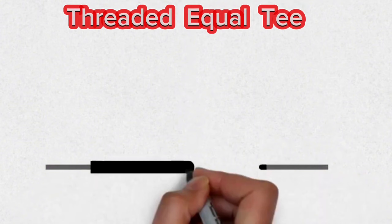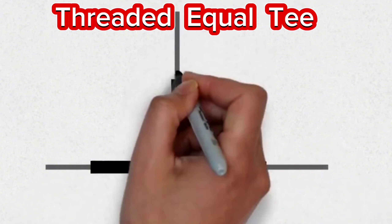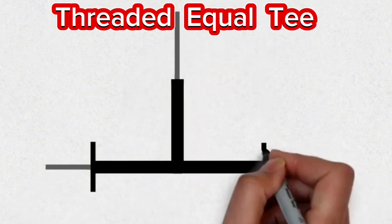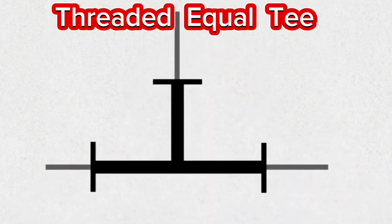This symbol, which is used in pipe isometrics, is the isometric symbol of the threaded equal pipe T. These equal pipe T symbols are used in threaded pipeline isometrics.